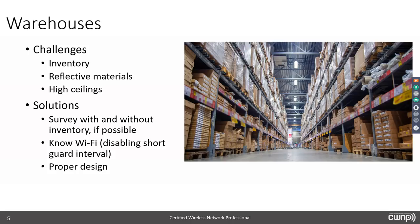Let's take a look at some use cases. Looking at a warehouse, the first challenge is inventory. If the inventory were always there at a constant level, we could design understanding the RF propagation based on the absorption and reflection of the materials and move on. But what happens when the inventory is not there — when many of the shelves are empty? In a distribution warehouse, you hope to move that stuff out. You want to sell it, so it can have very different levels of inventory.